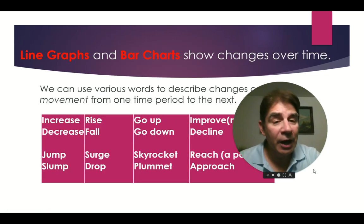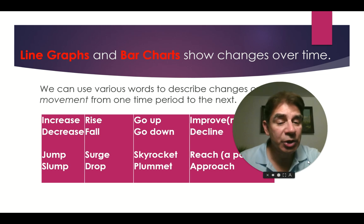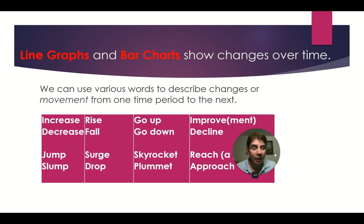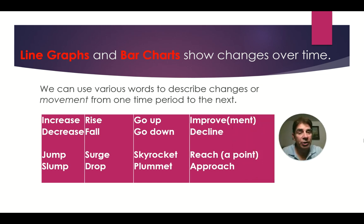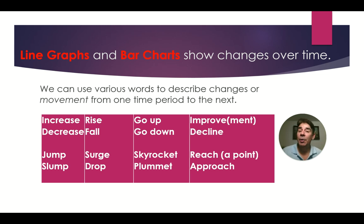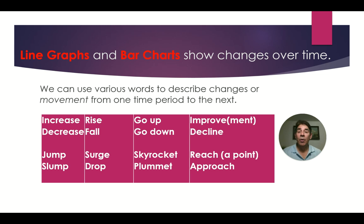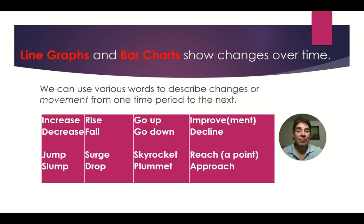Bar charts and line graphs show changes over time. We can use various words to describe these changes from one time period to the next. For example, we can say go up or go down, increase or decrease, rise or fall. We can use other words like skyrocket or plummet to describe different types of movement.